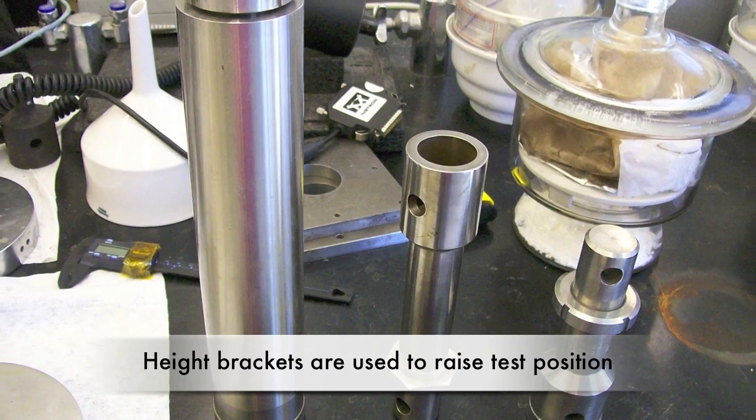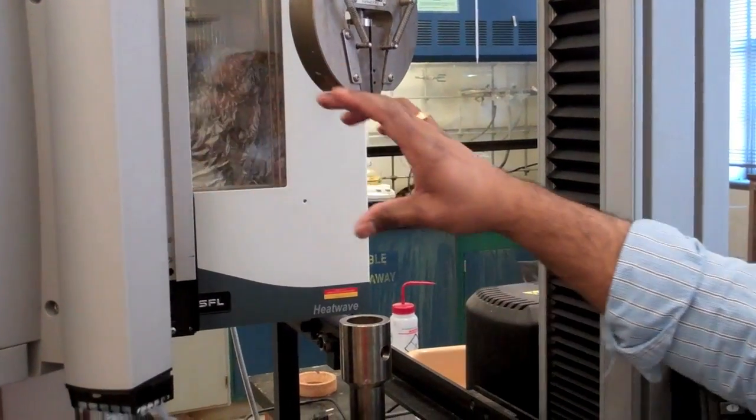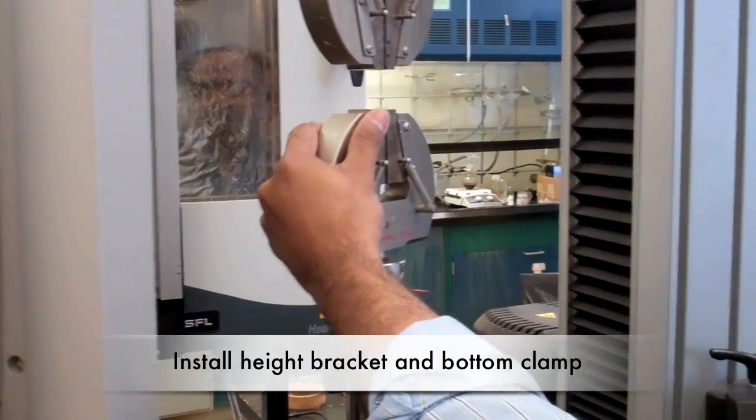Height brackets are used to raise the sample. The height change is needed to hold the sample at the level of the video extensometer. The brackets can be added with a pin along with the bottom clamp.